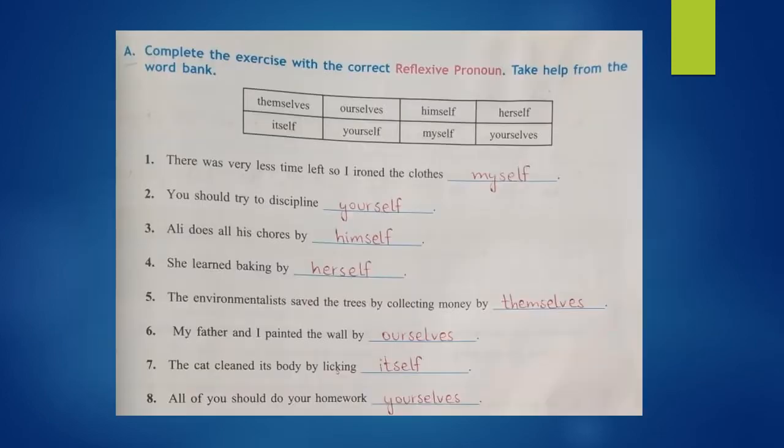Now come to Exercise A on page number 91. Complete the exercise with the correct reflexive pronoun. Take help from the word bank. The reflexive pronouns given here are: themselves, ourselves, himself, herself, herself, yourself, myself, and yourself.